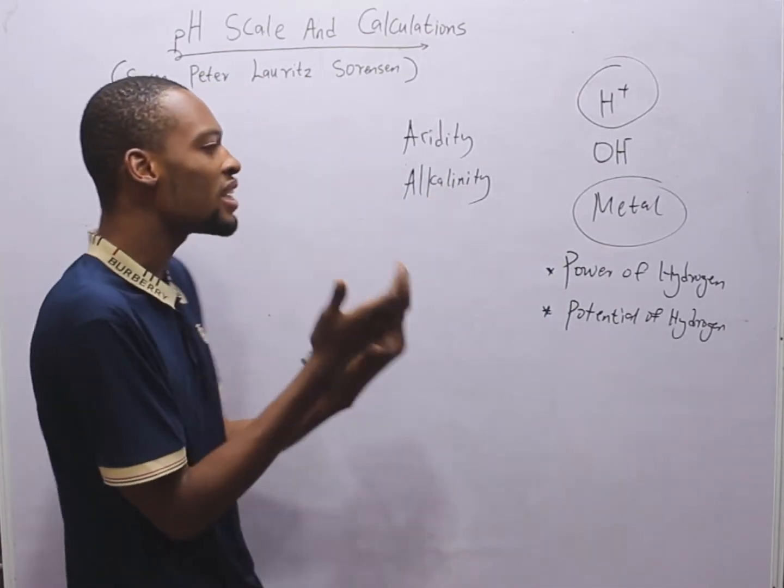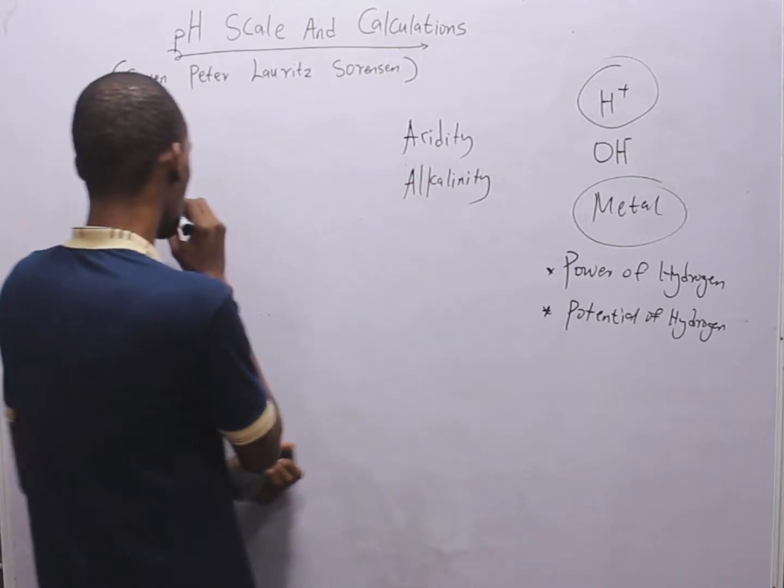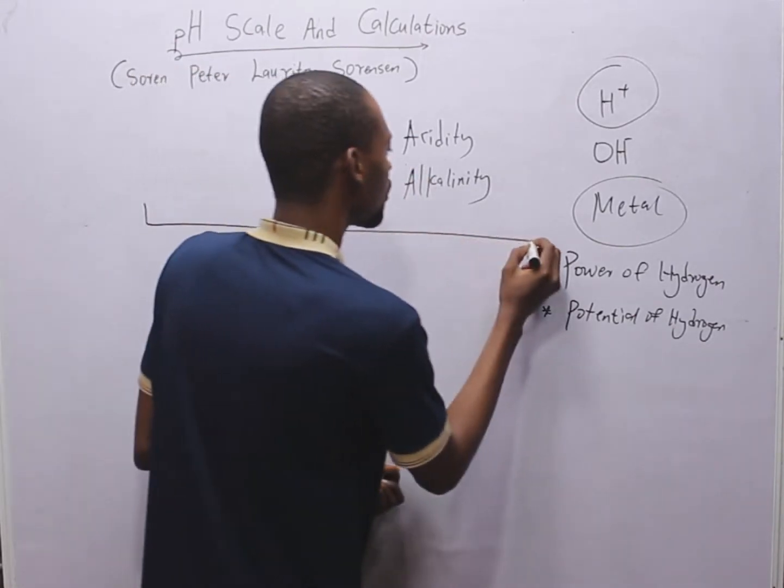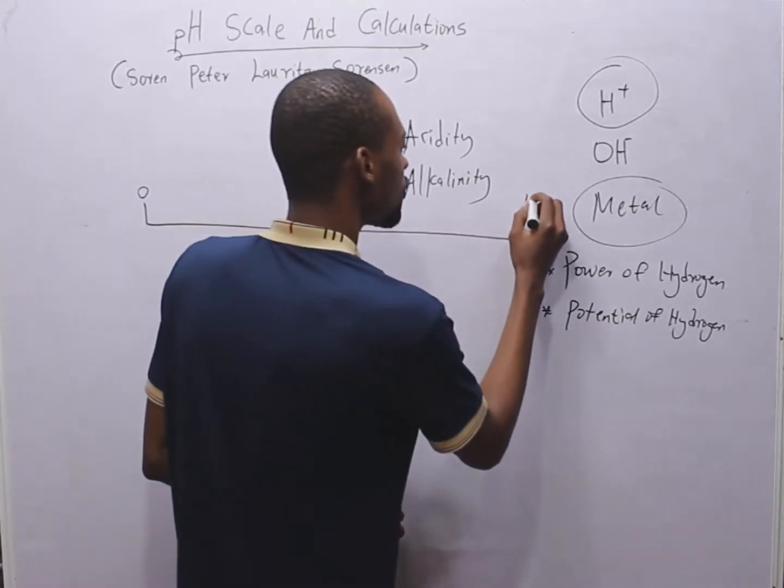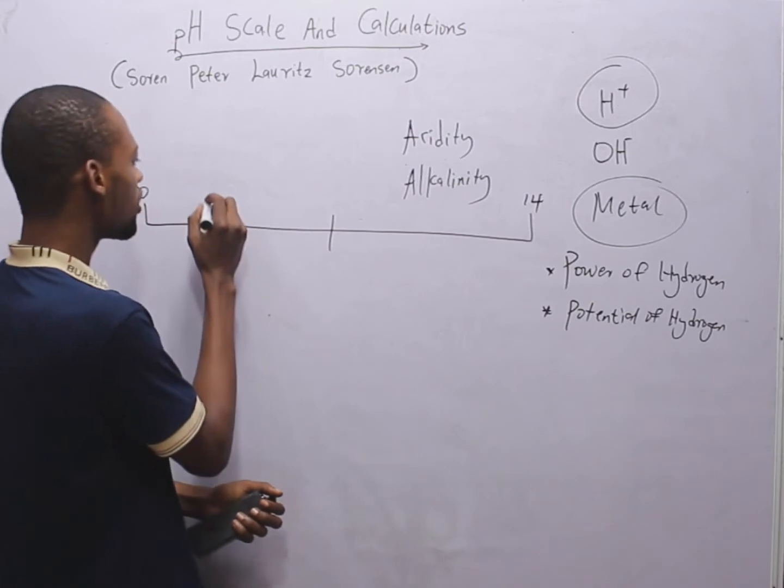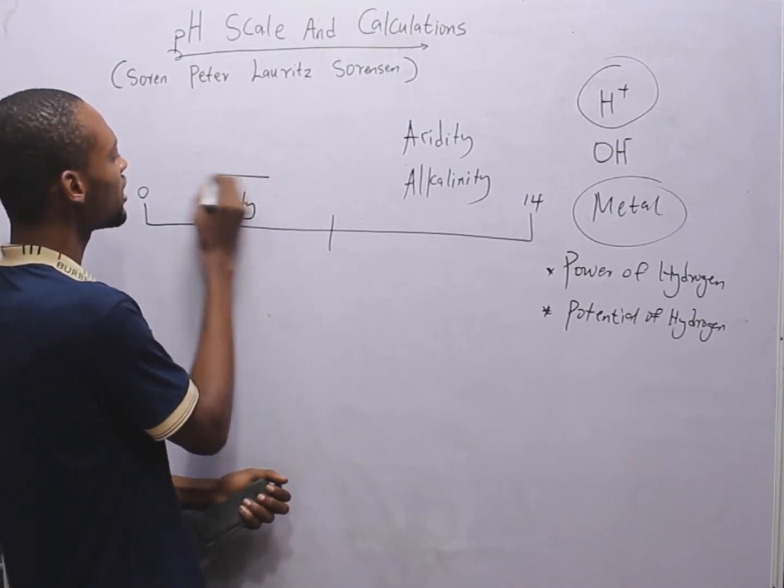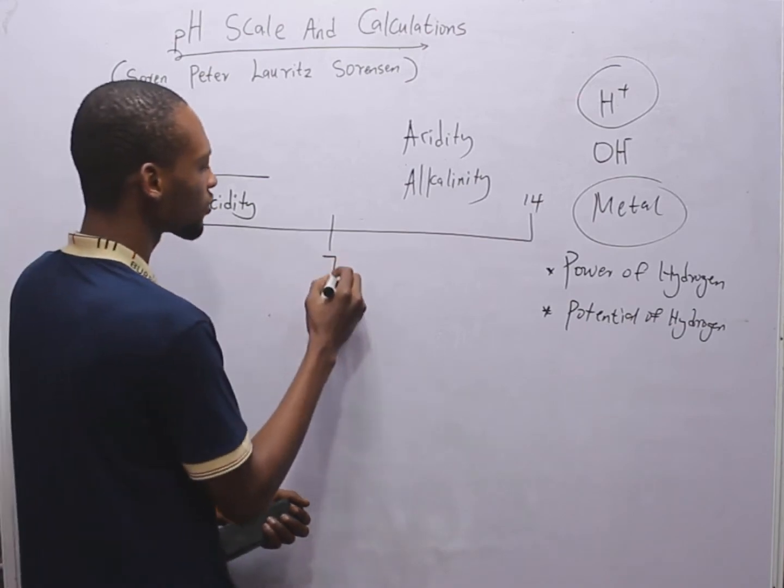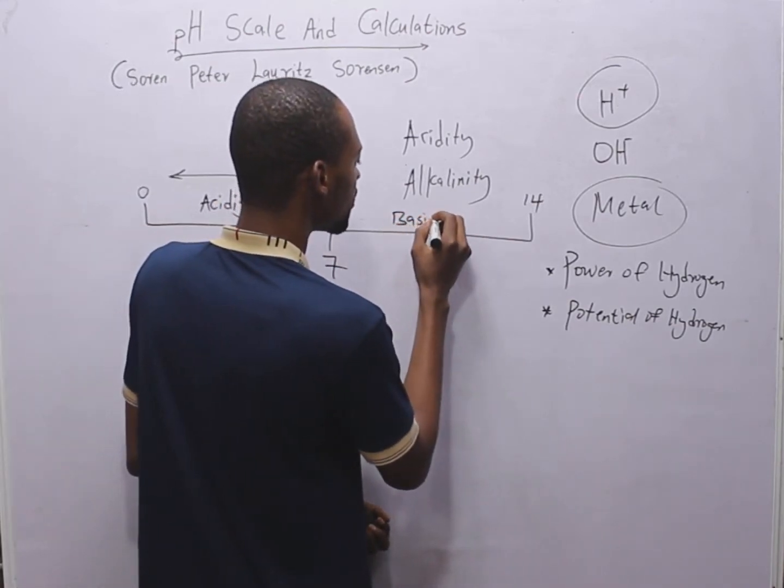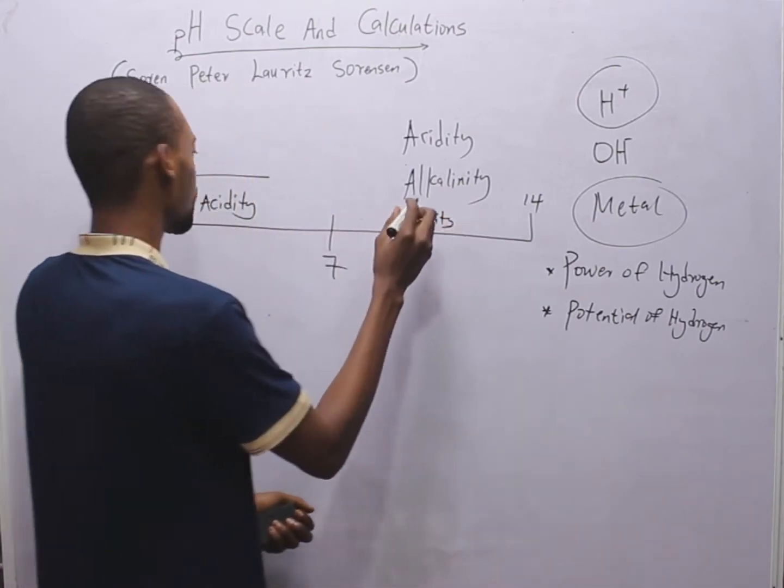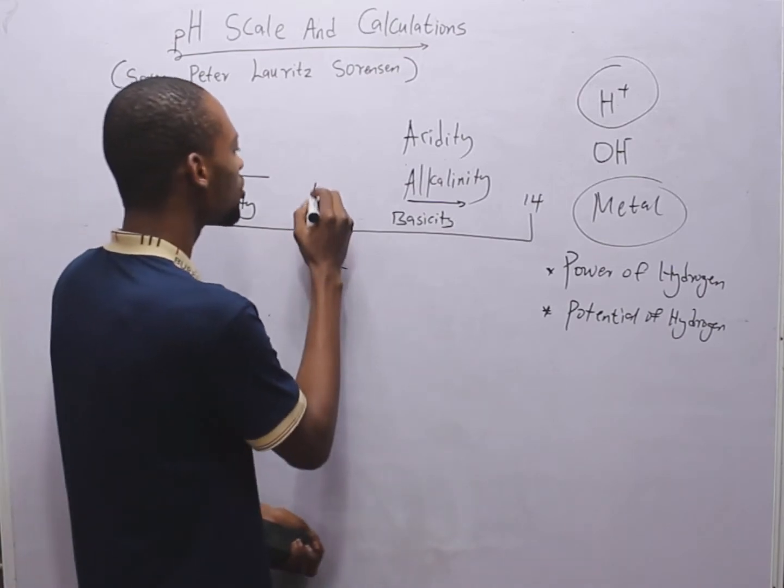Now we have pH scale of 14. This is it. From here to here. This is zero. This is 14. So in this region, we have acidity. Acidity increases. This is seven. Here we have base or basicity. If I am correct, I will check that spelling out. It increases. This is seven. Here it's neutral.